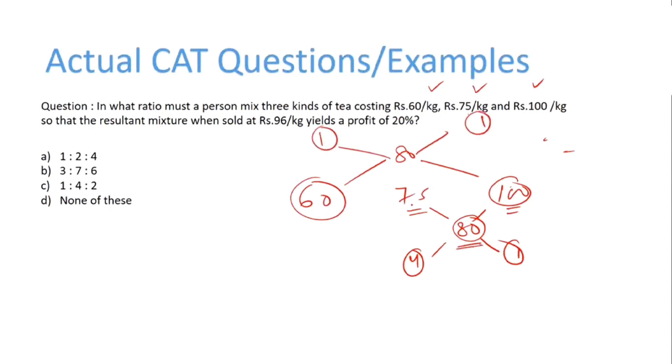However, 80 is not available between 60 and 75. So therefore, there is one part corresponding to 60, four parts corresponding to 75, and corresponding to 100 there are two parts. One part here and one part here. So the answer is 1 is to 4 is to 2. I hope this is clear to you. Thank you so much. All the best.